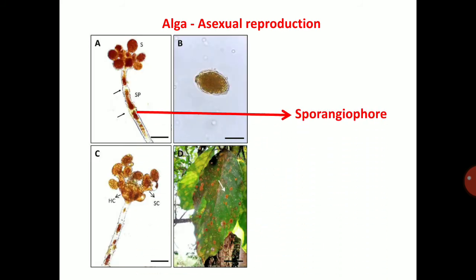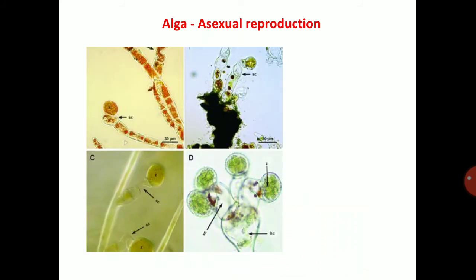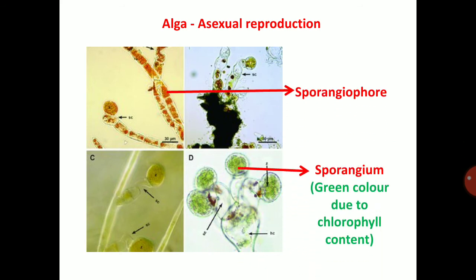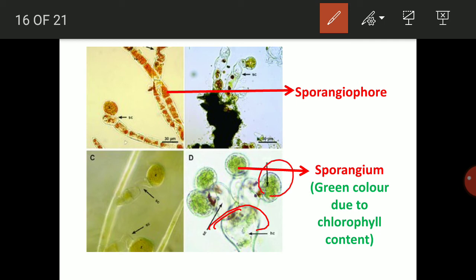The sporangium appears in orange color. A single sporangium contains zoospores. This is the infected leaf showing sporangia in green color due to chlorophyll content. The vesicle and sporangium structures are visible.